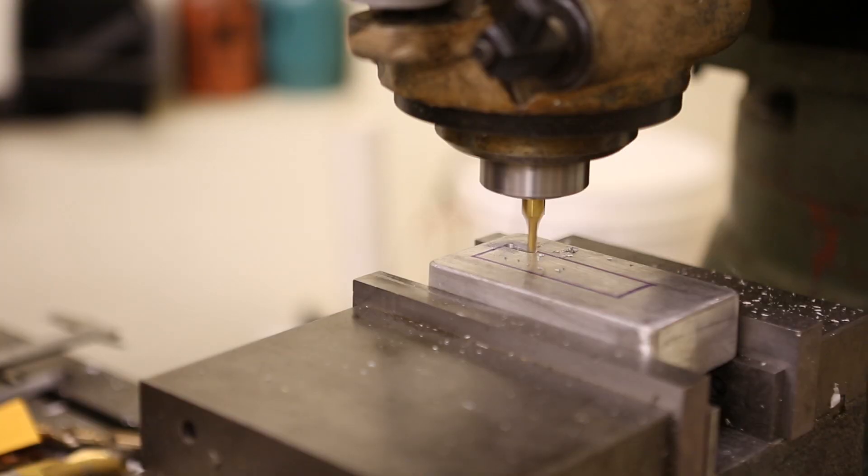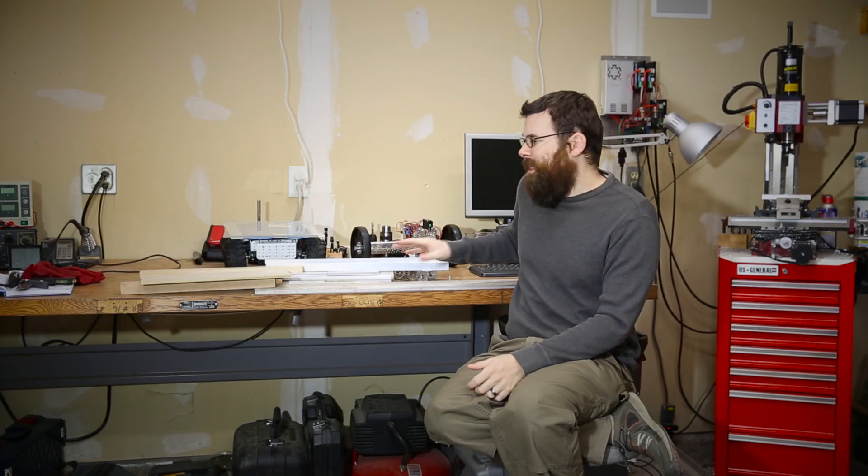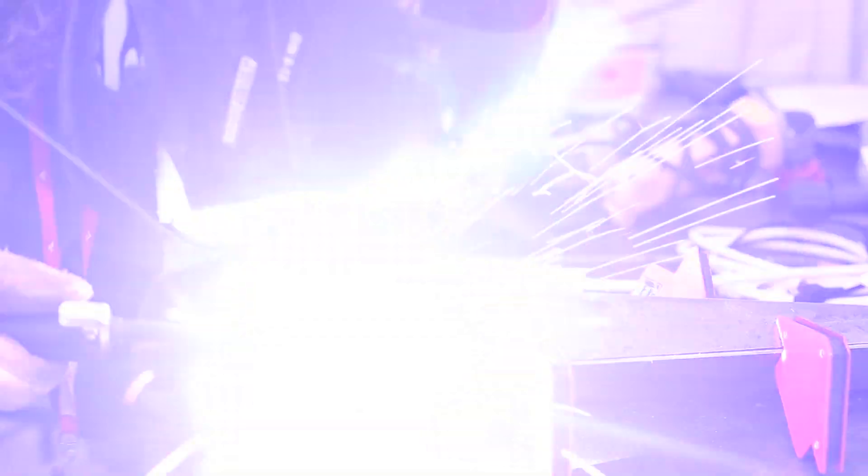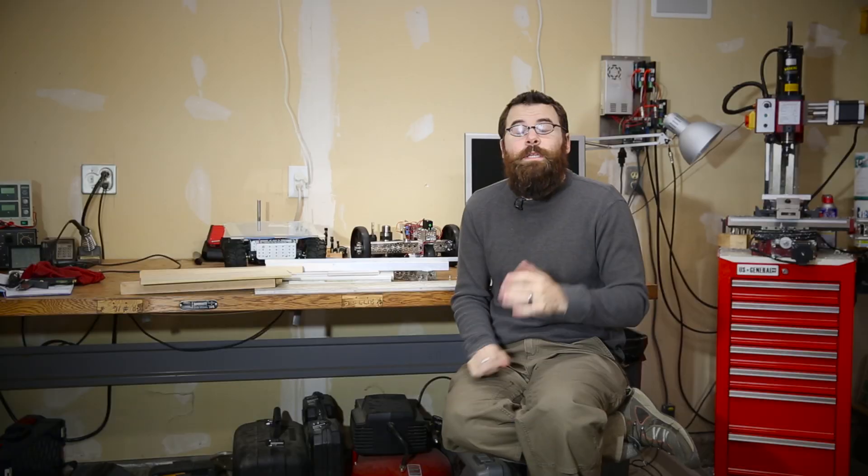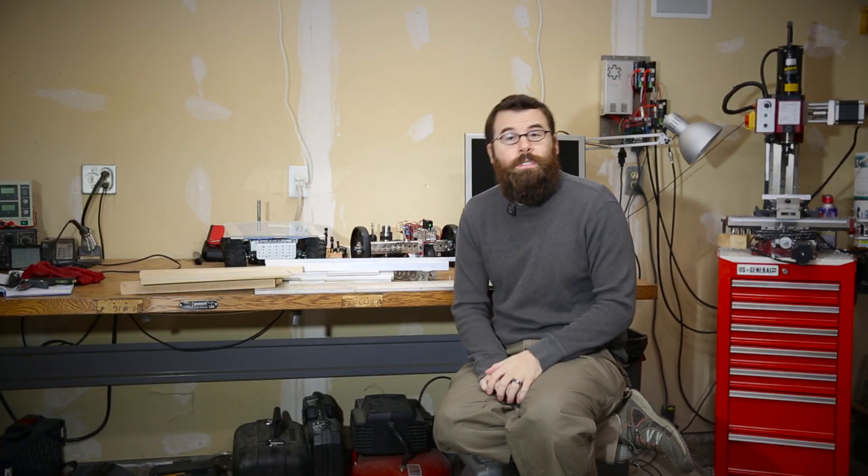When choosing the right metal for your project there's a couple things to take into consideration. Aluminum does machine very well but it's a lot more difficult to weld and keep it precise. Steel is a lot easier to weld but it doesn't machine quite as nicely as aluminum. Steel also oxidizes and can rust whereas aluminum is not prone to oxidization.